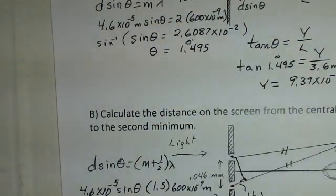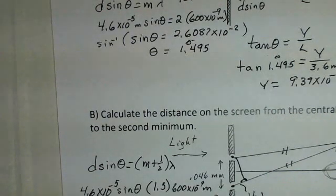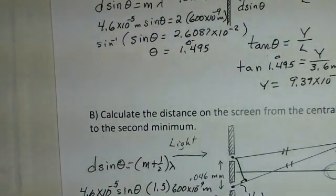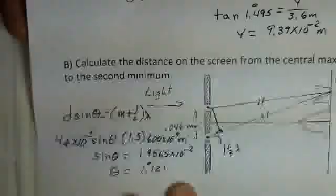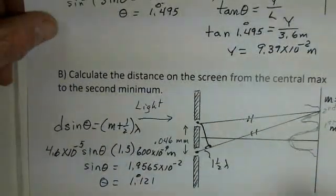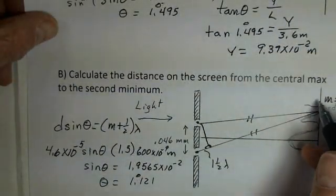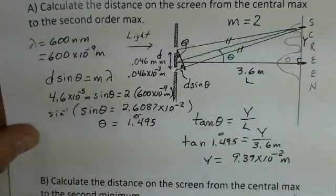I came up with sine of theta 1.9565 times 10 to the minus 2. I take inverse sine of both sides, and I have theta 1.121 degrees. And it is appropriate that this angle is smaller than the angle up above. We're at the second minimum, which is before the second maximum. We calculated the position of the second maximum up above.